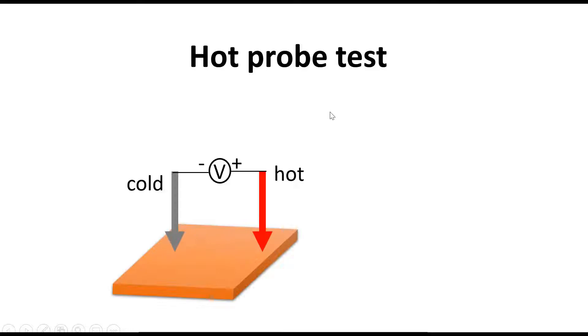There is one simple method to know what type of thin film you have deposited. It's known as the hot probe test. The hot probe test is a way by which we can find out whether our deposited film is P-type or N-type.